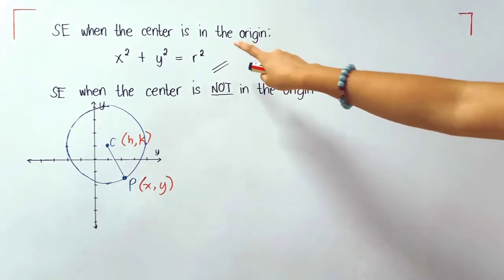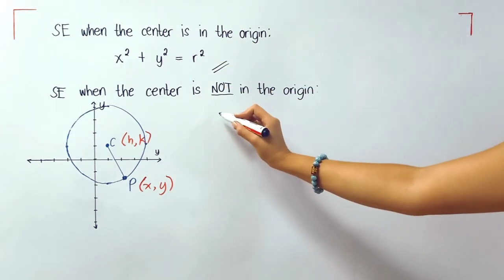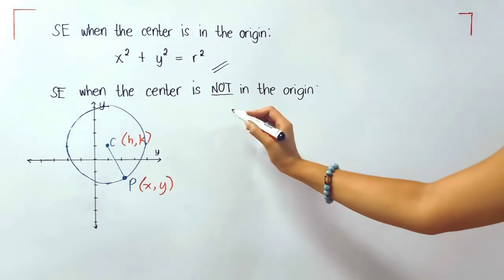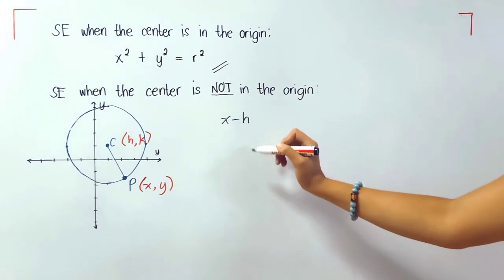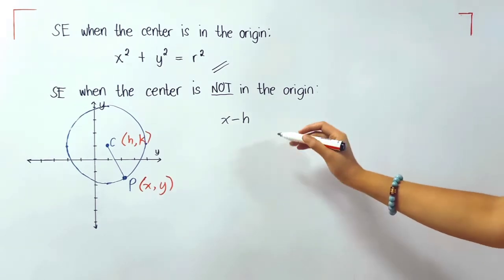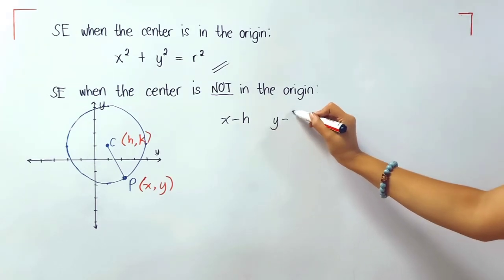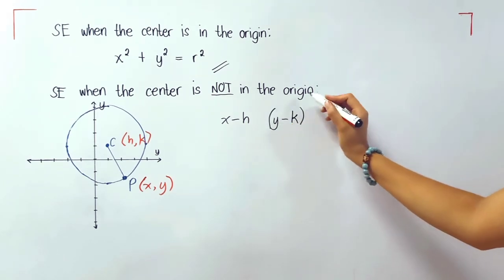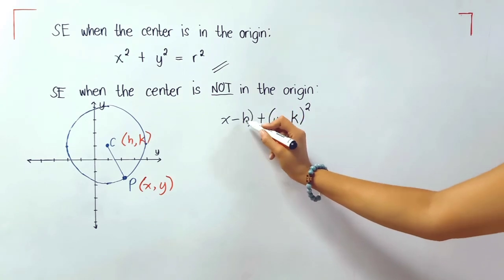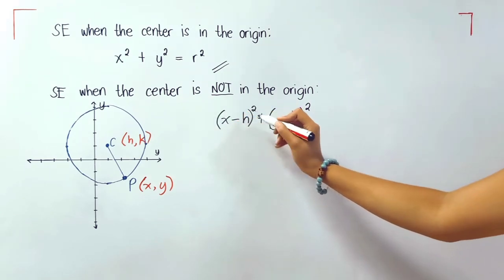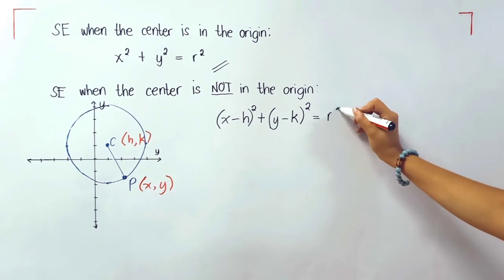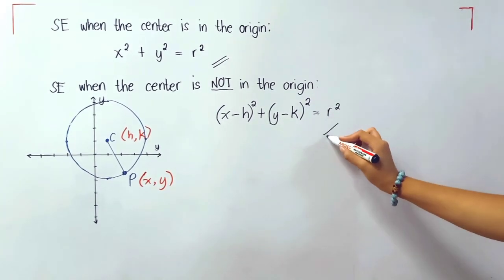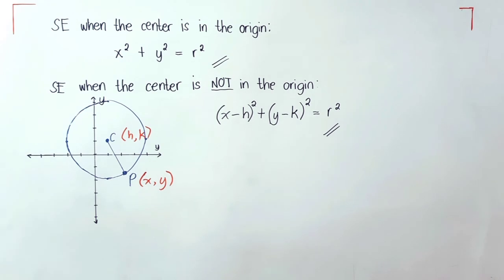Now we will pattern the new equation to the previous one. So instead of x squared, we'll make it x minus h and instead of y squared, we'll make it y minus k. And then we'll simply have the exponent 2 still equal to r squared. The corresponding x of our center is h, while the corresponding y of our center is k. Therefore, we will always pair x with h and y with k.